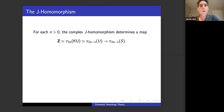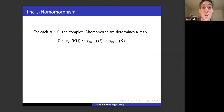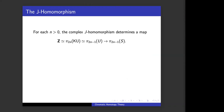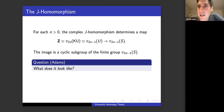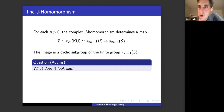Going back to the complex J-homomorphism: for every integer n, we get a map from the (2n−1)th homotopy group of U — which is also a copy of the integers, or π_{2n} of the KU spectrum — mapping to the (2n−1)th stable homotopy group of spheres. The image of that map is a finite cyclic group. A basic question, asked and answered by Frank Adams, is: what does this finite cyclic group look like? What is the image of the complex J-homomorphism?